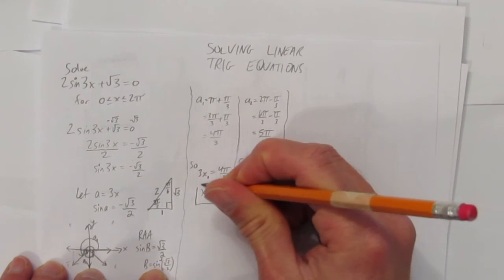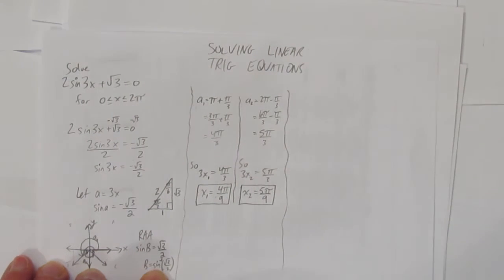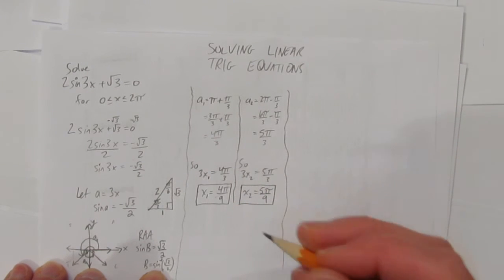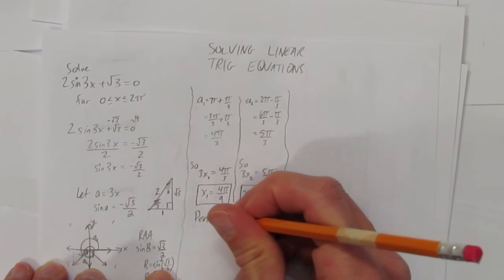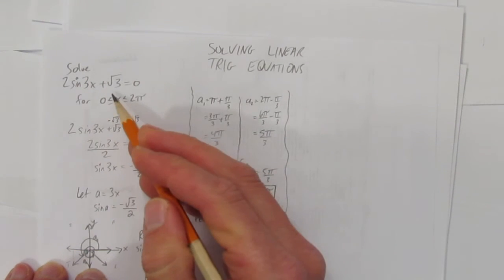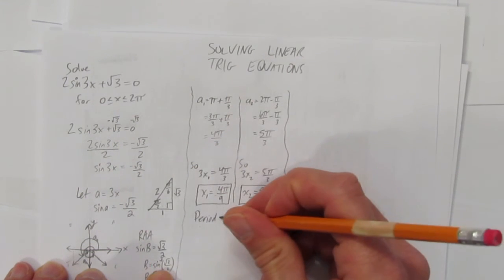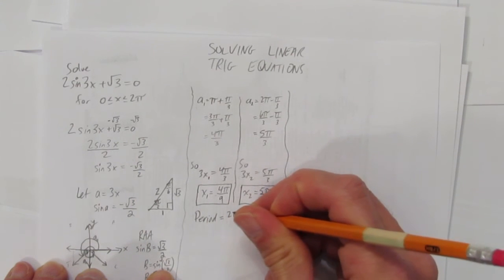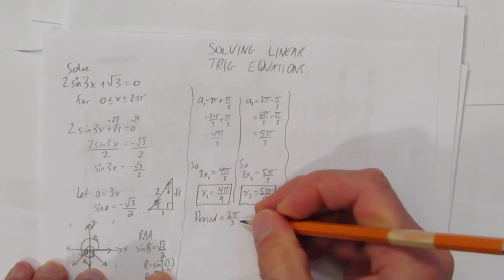There's a catch. The catch is that there are much more than two solutions here. The reason for that is the period of this wave. Maybe it's easier to look at it in this form. Either way, there's a k value here. You might notice or might remember from properties, the period is equal to 2π divided by that k value. In this case, 2π/3.